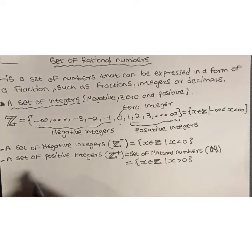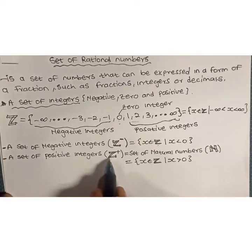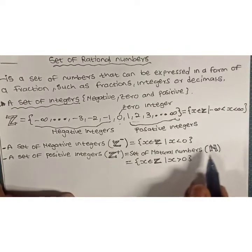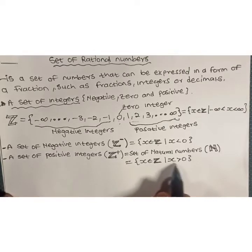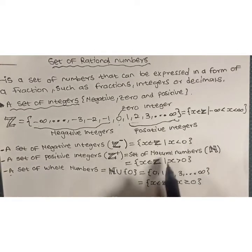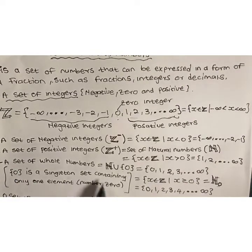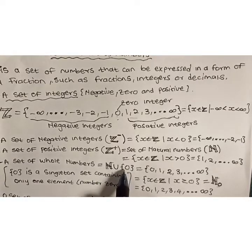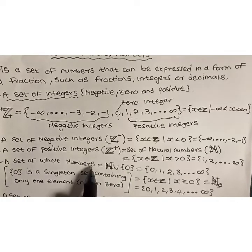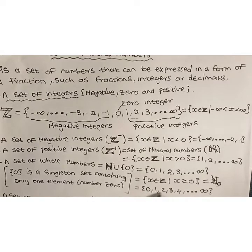We define the set of positive integers as the set of natural numbers. The set of positive integers is denoted by Z⁺, which is the same as the set of natural numbers denoted by N, given by x an element of integers such that x is greater than zero. Natural numbers are also known as counting or ordering numbers. A set of zero integers is a singleton set containing only one element, which is zero. The set of natural numbers and the set of zero integers together give rise to the set of whole numbers, denoted by N₀, given by x an element of integers such that x is greater than or equal to zero.